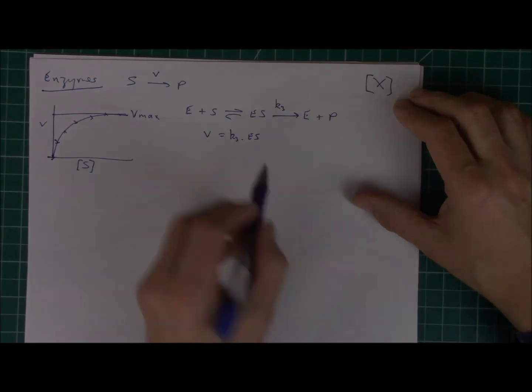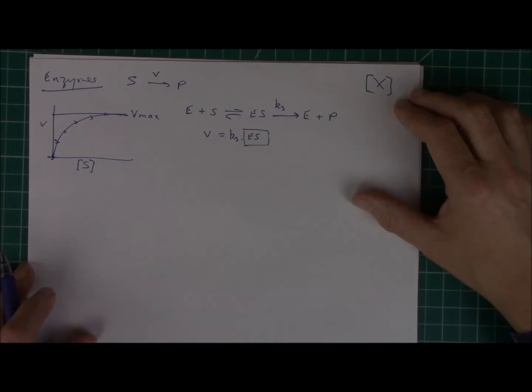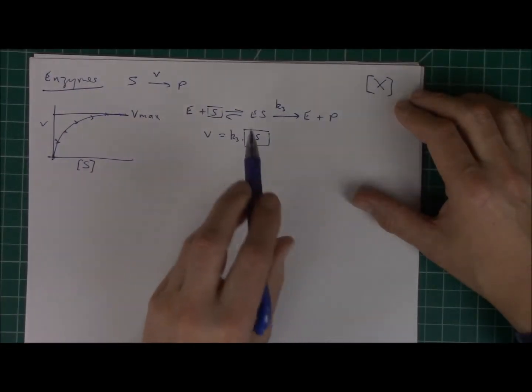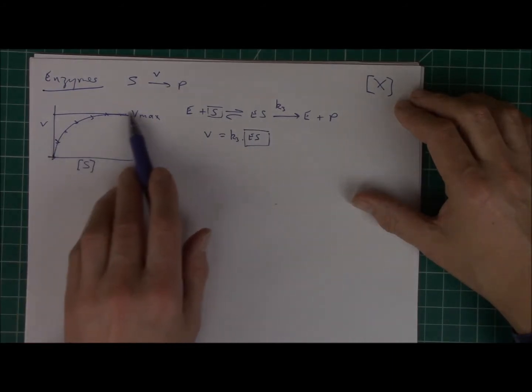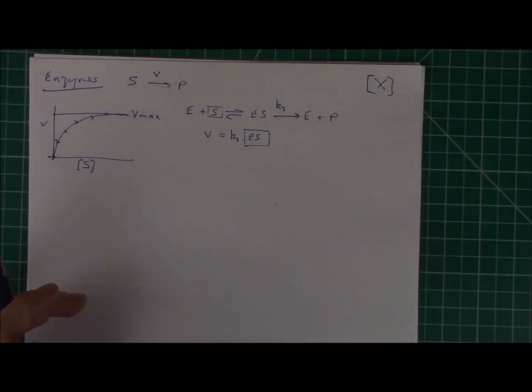Now, somehow I've got to do something with this ES. Obviously, I don't have access to ES, but I do have access to S, and somehow I have to relate S to ES so that I can produce this curve. So I'm going to have to make some assumptions here to get this moving.